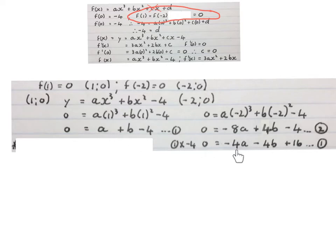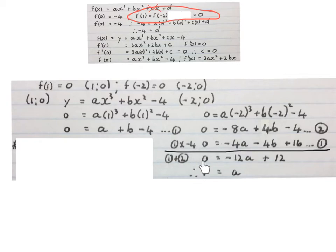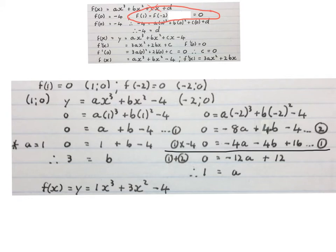Using elimination, I multiply equation 1 by minus 4 and write it underneath equation 2. Adding equation 1 and equation 2: minus 8a minus 4a gives minus 12a, plus 4b minus 4b cancels, and minus 4 plus 16 is plus 12. Solving gives a = 1. Substituting a back into equation 1 and solving for b gives b = 3. The final equation of this cubic function is now complete. Please pause the video and make sure you understand what we did.